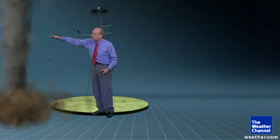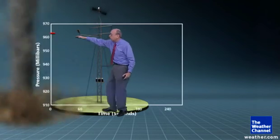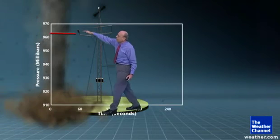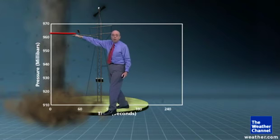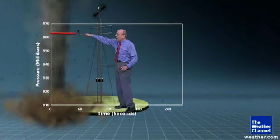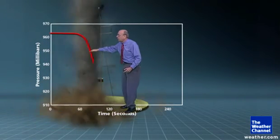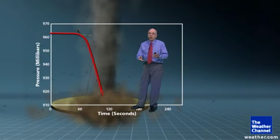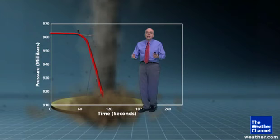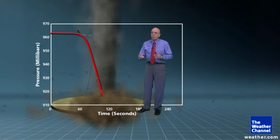We'll watch the pressure change as the tornado approached this site from the southwest. It began about 961 millibars and then dropped very rapidly as the edge of the tornado approached, and then the tornado moved over the site down to about 913 millibars—about a 47 millibar drop. So there's not a vacuum; that's only about a five percent change of normal pressure.